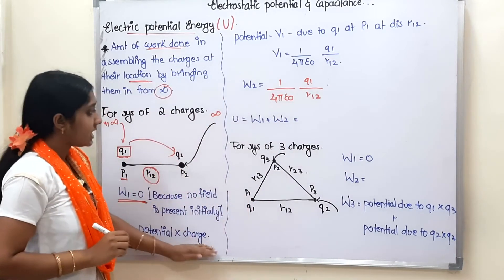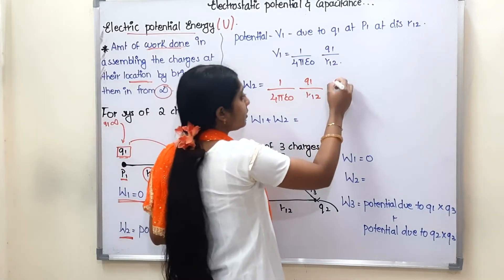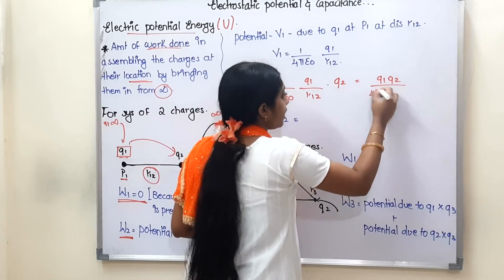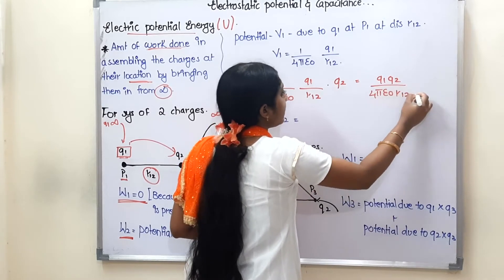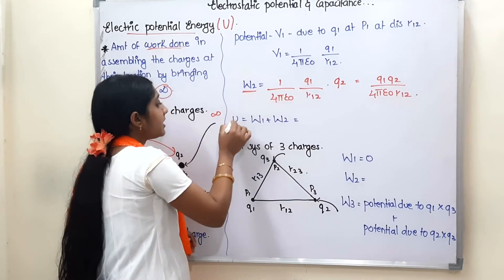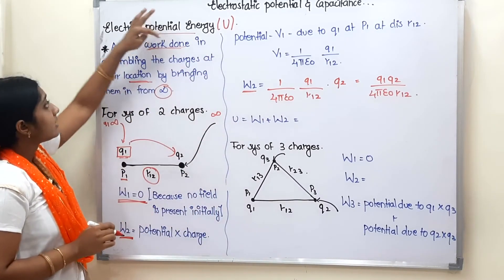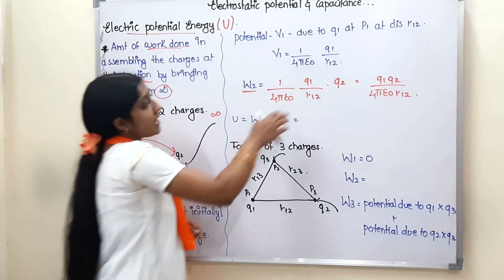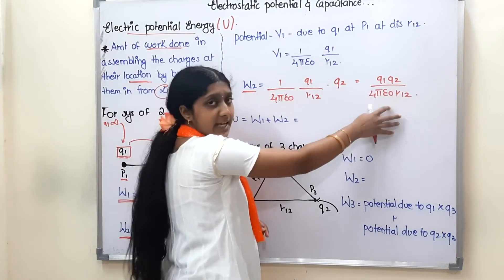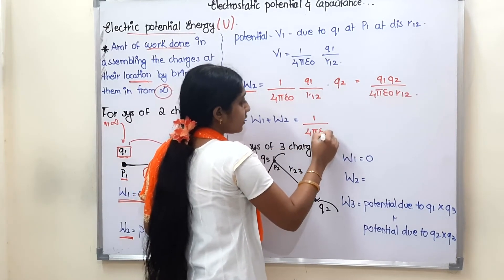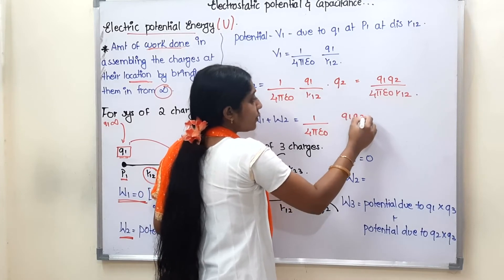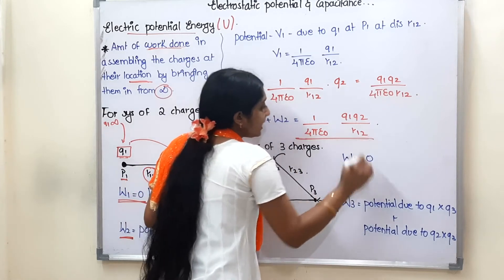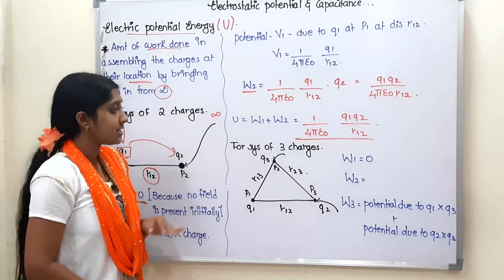So W2 equals Q1·Q2 / (4πε₀·R12). Finally, the total potential energy U equals W1 plus W2. W1 is zero, so the final answer is U = 1/(4πε₀) · Q1·Q2/R12. This is the final potential energy for the system of two charges.